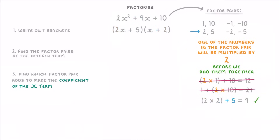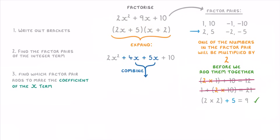To double check, we can expand the brackets: 2x × x = 2x², 2x × 2 = 4x, 5 × x = 5x, and 5 × 2 = 10. Combining the x terms gives 9x, so we have 2x² + 9x + 10, which is what we started with — so we know we've done it correctly.